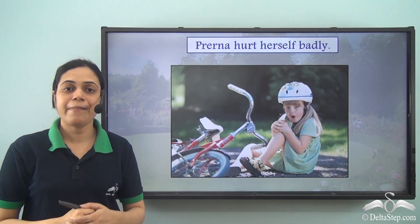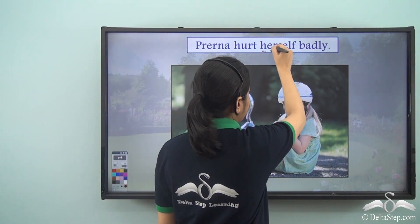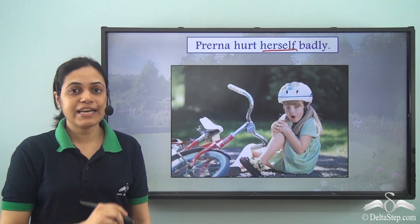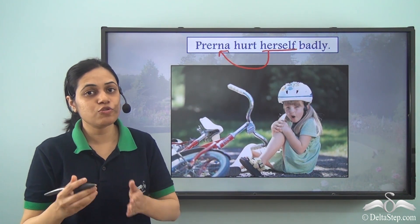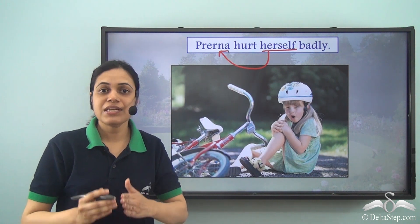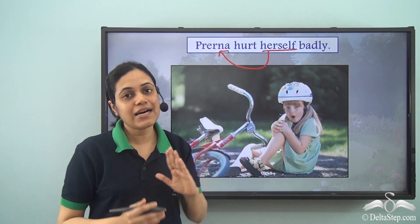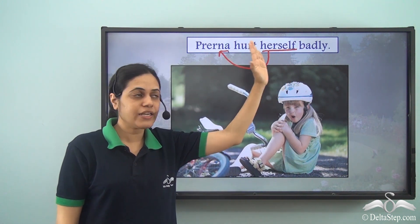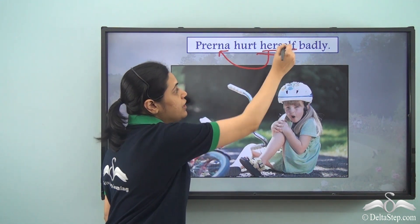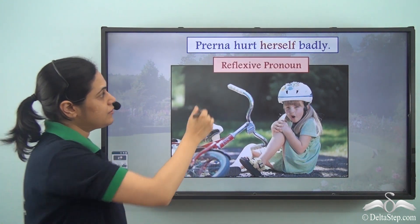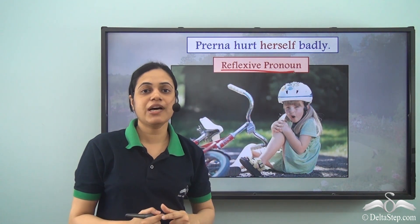'Pradna hurt herself badly.' What is the pronoun here? 'Herself' is the pronoun, just like 'himself' in the previous sentence. But the difference is that 'herself' is not used for emphasizing — it is used because the subject and the object are the same. Pradna is the subject and Pradna is the object, so instead of writing Pradna again we use 'herself.' Because the subject and object are the same, it is a reflexive pronoun.